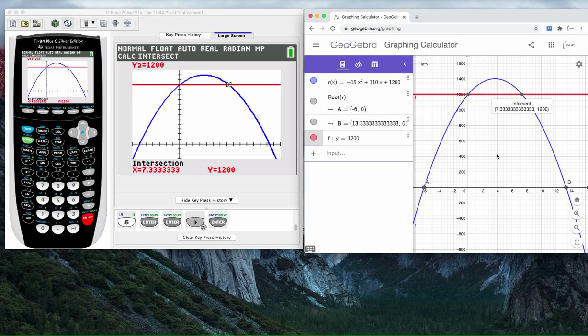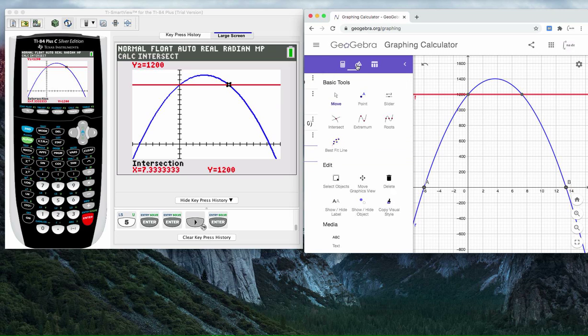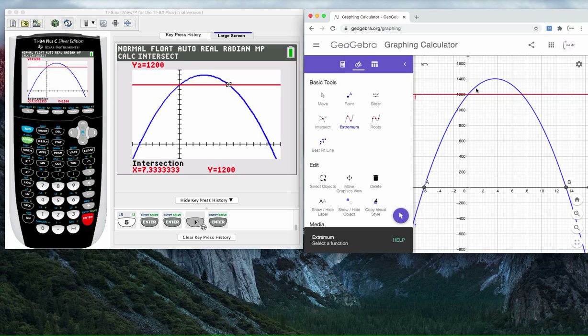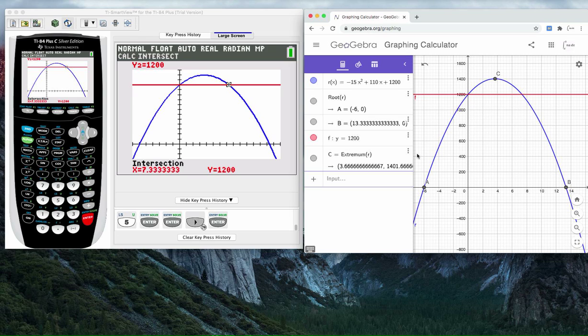For number nine, we want to mark the graph at the highest point. This is called its vertex. We're going to use technology to find the precise value at this point. With GeoGebra, it is the easiest. You click on extremum and click on this blue graph. Then I can go back to my calculator view and see the value of the vertex. The x-value and the y-value.